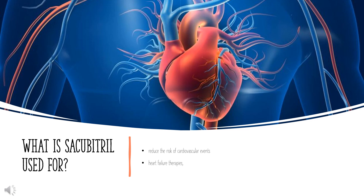What is Secubitril used for? It is used in combination with valsartan to reduce the risk of cardiovascular events in patients with chronic heart failure, NYHA class 2-4, and reduced ejection fraction. It is usually administered in conjunction with other heart failure therapies, in place of an ACE inhibitor or other ARB.